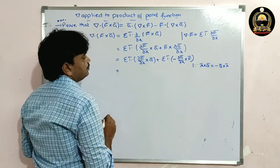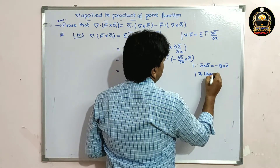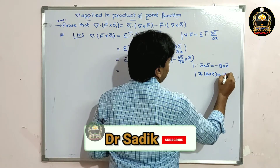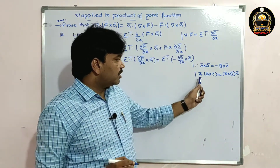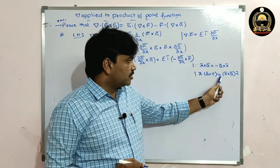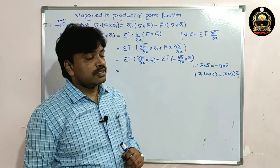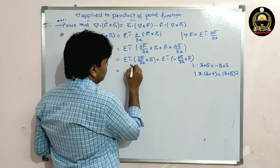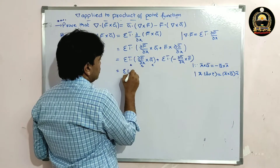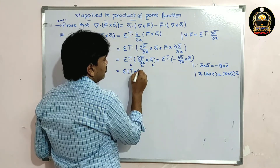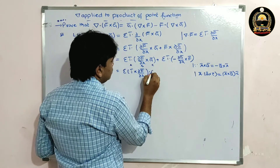Now we apply the scalar triple product identity. We know that a-bar dot of b-bar cross c-bar is equal to a-bar cross b-bar dot c-bar. Using this identity, the first term sigma i-bar dot i-bar cross dou f-bar by dou x dot g-bar can be rearranged.